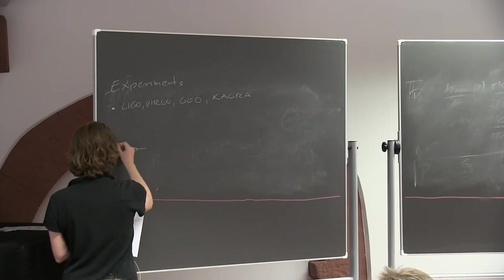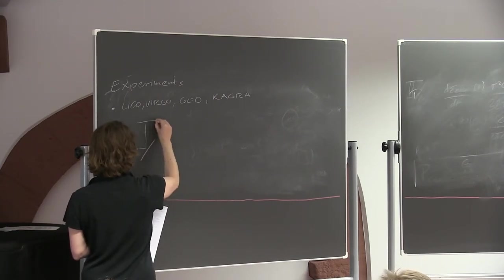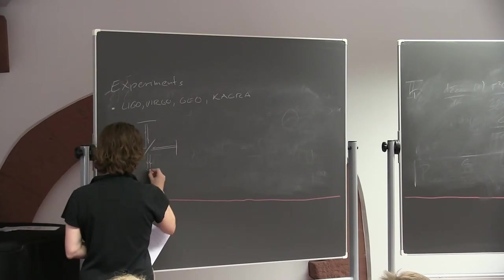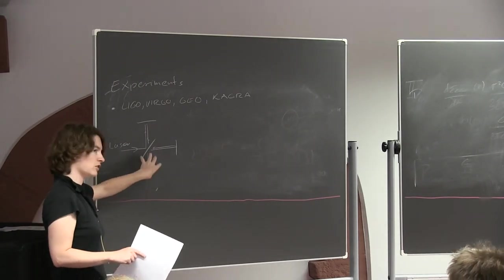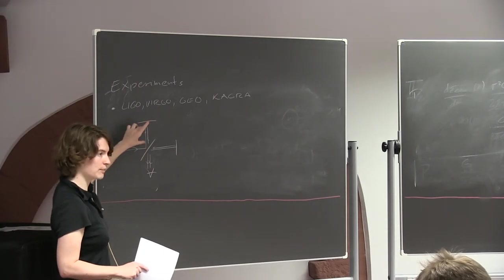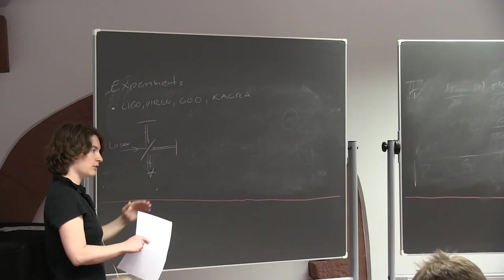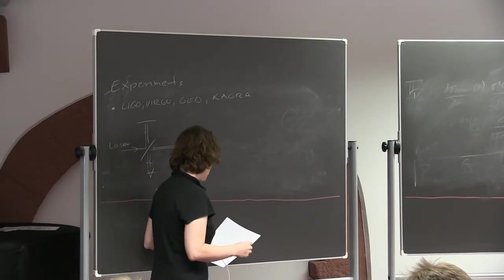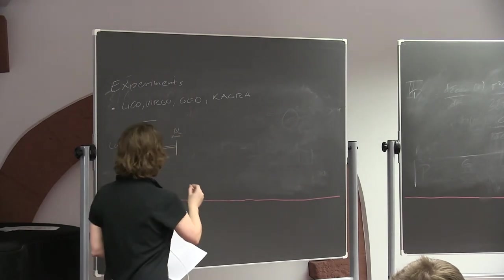You have a laser, a beam splitter, and you build a Michelson interferometer. Light goes down one arm, reflects off a mirror, comes back; and the same in the other arm. At the output you have a detector measuring photons. You tune this so that you're on the dark fringe — destructive interference. Then in the proper detector frame, when a gravitational wave passes, the length of one arm shifts relative to the other. The interference pattern changes and you suddenly see light.